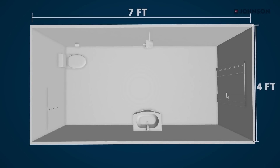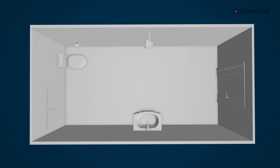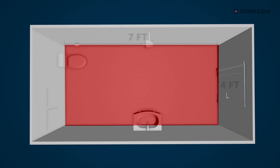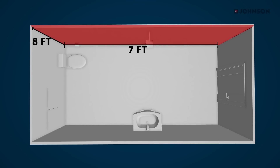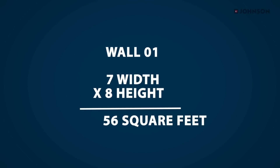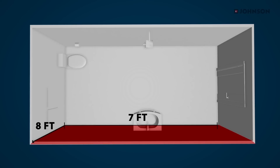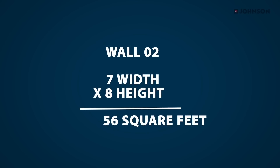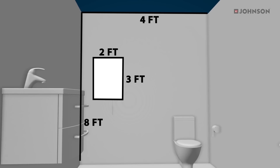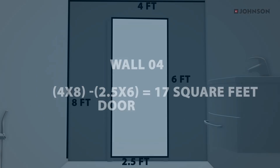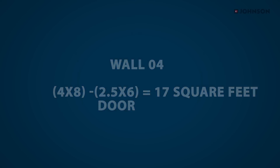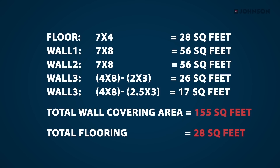Let's see how. A bathroom would be 7 by 4 feet considering standard size. Breaking into wall and floor tiles: the floor is 7x4 which equals 28 square feet. Wall 1 is 7 width by 8 height which is 56 square feet. Wall 2 is 7 width by 8 height which is 56 square feet. Wall 3 is 4 by 8 minus a 2 by 3 window which is 26 square feet. Wall 4 is 4 by 8 minus a 2.5 by 6 door which is 17 square feet. Total wall covering area is 155 square feet and total floor area is 28 square feet.